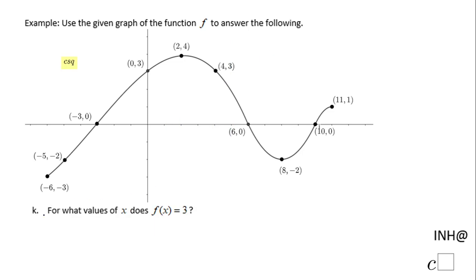Let's move to part K. For what value of x does the function equal 3? That's f of x equals 3. So we have two choices: you can take a look where the y is 3, which is here and here, or you can grab the horizontal line y equals 3 and you notice the same story.